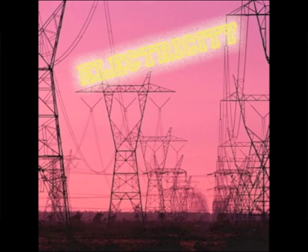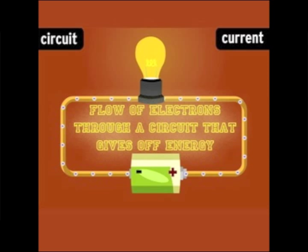Electricity is a form of energy, and there are actually different kinds of electricity. Current electricity is the flow of electrons through a circuit that gives off energy. It is from current electricity that we get energy to power our homes and electronic devices.